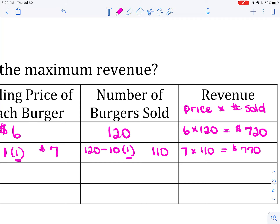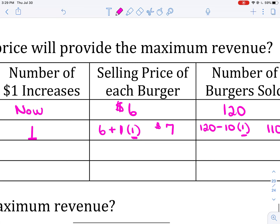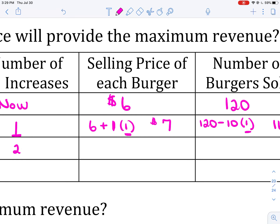Comparing to the first line in the chart, I'm actually doing better — $770 taken in versus $720. Maybe I need to be more brave. If I increase the price by $1 two times, the new price is $6 plus $1 times 2, which is $8.